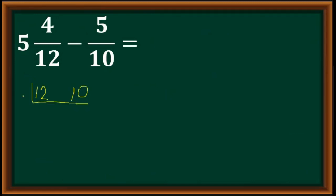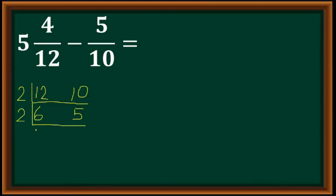We always use prime numbers as our divisors. 12 and 10 are both divisible by 2, so 12 divided by 2 is 6, and 10 divided by 2 is 5. Next, we still have 6 and 5, but 5 is a prime number. We continue dividing: divide 6 by 2, giving 3. 5 divided by 2 can't be done because there would be a remainder.